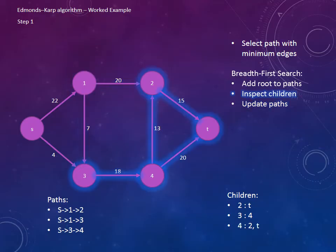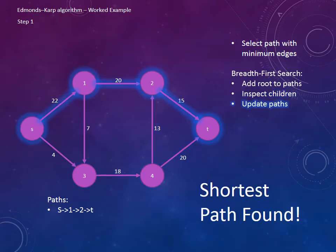And now finally, we just need to check the children of the paths that we currently have. So from 2, we can get to the sink straight away. Congratulations, the algorithm has terminated. Now that we've found a node that connects to the sink, we can go back and update our paths accordingly so that we have a path from source to sink. The shortest path has been found.